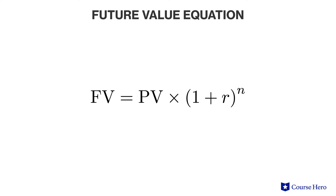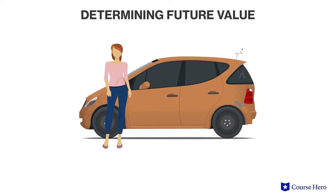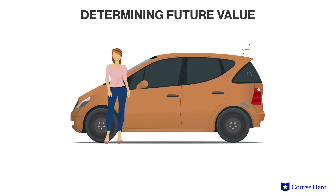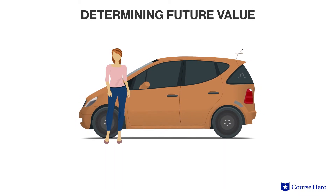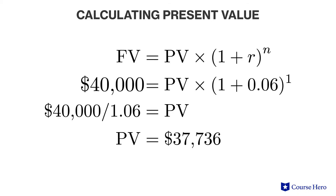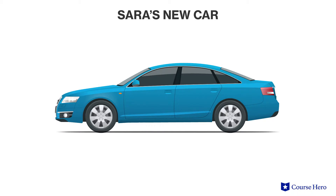The future value of a lump sum payment can be computed by multiplying the present value by one plus the interest rate, elevated to the number of periods over which the interest will be compounded. For example, Sarah needs to have $40,000 to replace her car next year. She can earn 6% interest on her investment and has just one year until she needs to purchase a new car. $40,000 is the future value, 6% is the interest rate, and 1 is the number of periods. Sarah would have to invest $37,736 today and earn 6% on her investment so that in one year she will have the $40,000 she needs to buy her car.